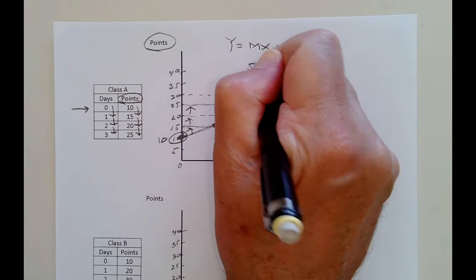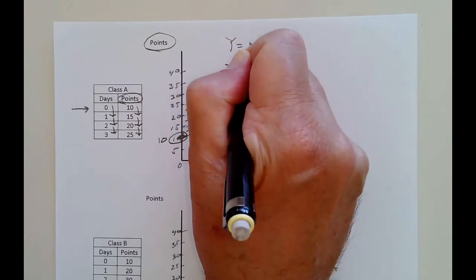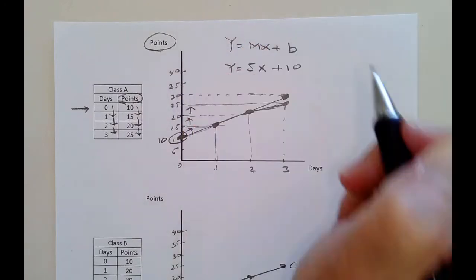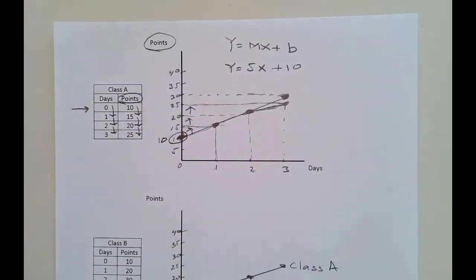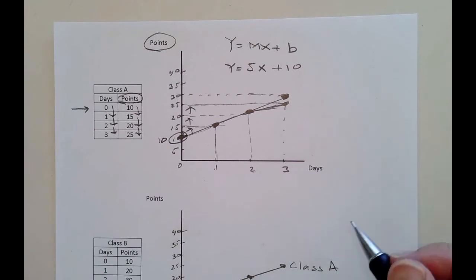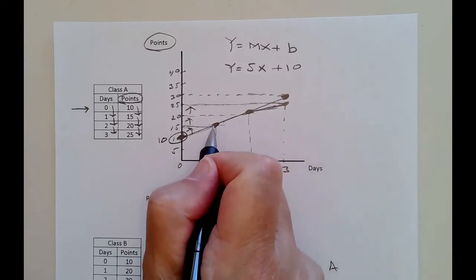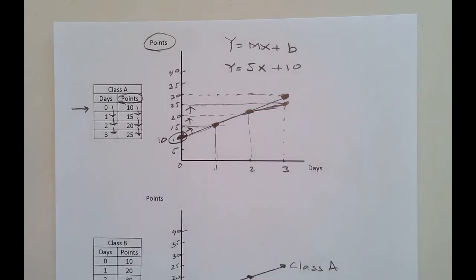Our equation is y equals 5x plus 10. It's a positive relationship because every time you come to class, you get more points. We could also get the slope by looking at the graph. You may remember from math class that to find the slope of a line, you need just two points, because the way x affects y is consistent and never changes.